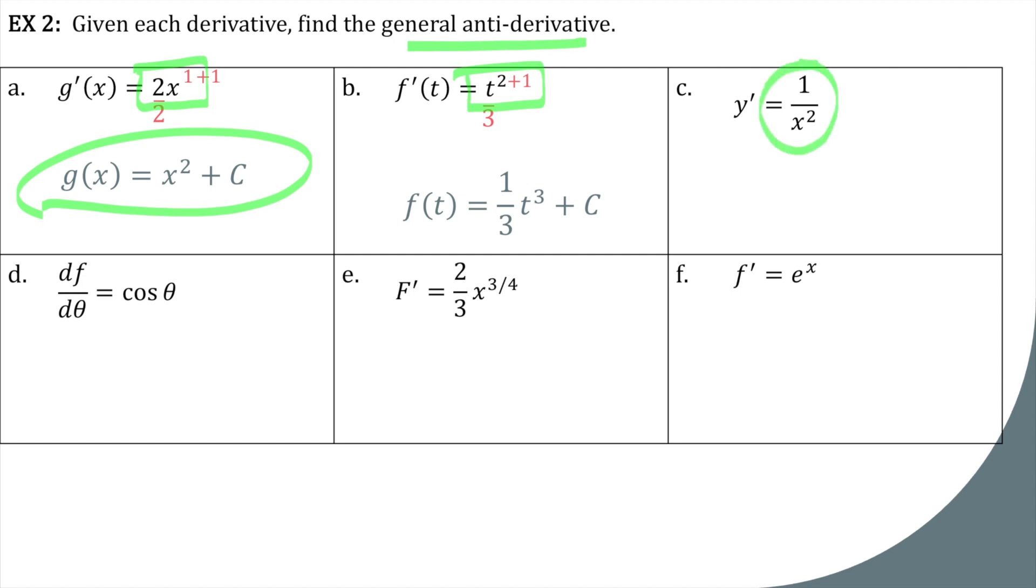What about this one? 1 over x squared. Easiest thing to do here is to rewrite it as a negative exponent. And then it's the same thing. Add 1 and divide by it. So negative 2 plus 1 is negative 1. So we have negative x to the negative 1 plus c. If you want to leave it like that, you're welcome to. If you want to rewrite it as negative 1 over x plus c, also fine.